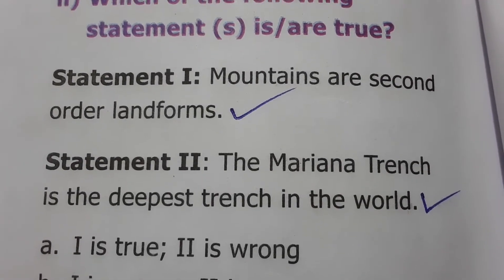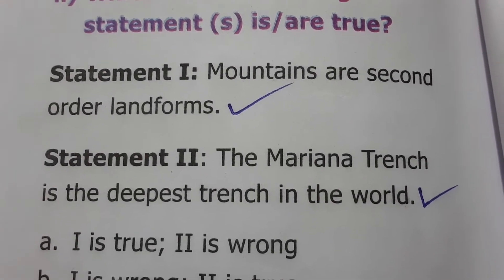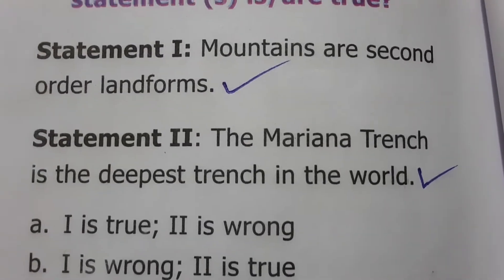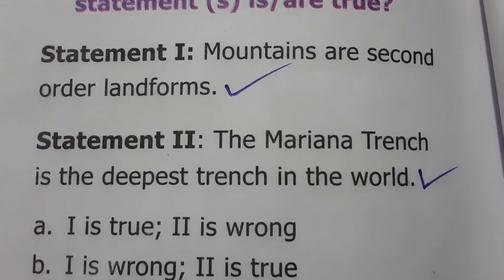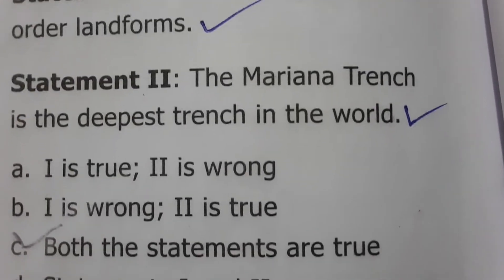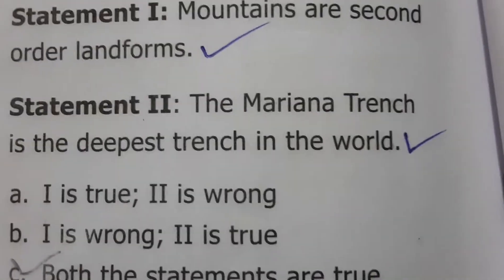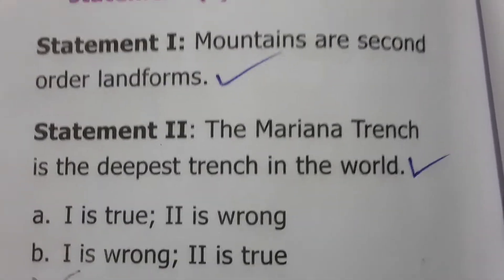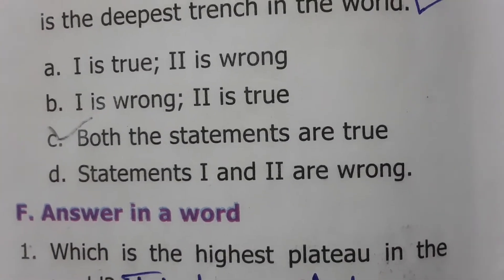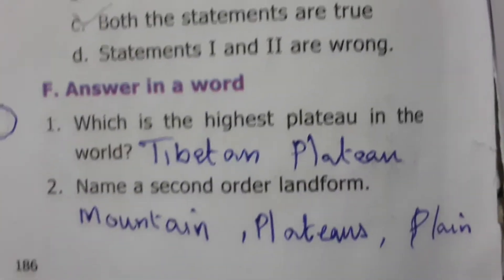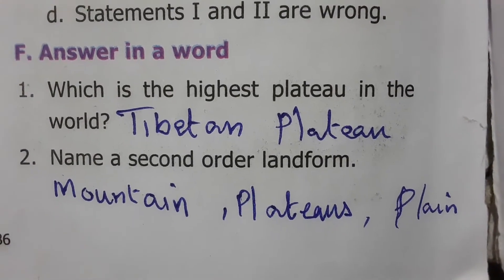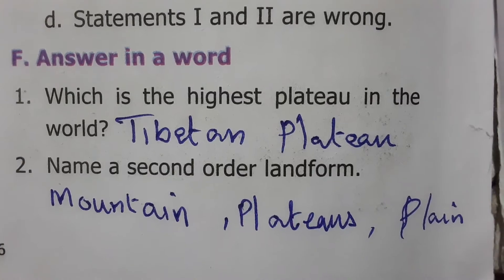Which of the following statements is true? Statement 1: Mountains are second order landforms — correct, as continents and oceans are first order and mountains are second order. Statement 2: The Mariana Trench is the deepest trench in the world, found in the Pacific Ocean — also true. So both statements are true and option C is the correct answer.